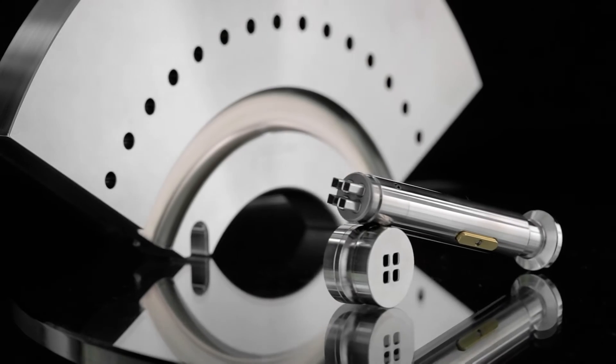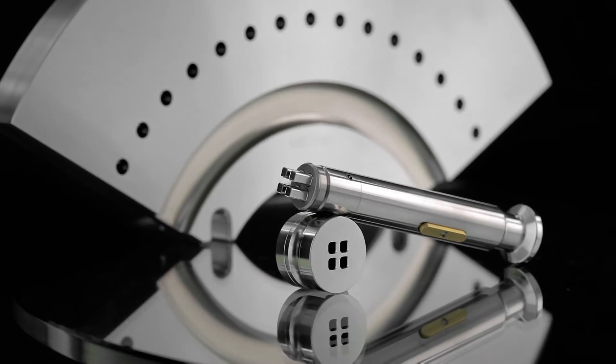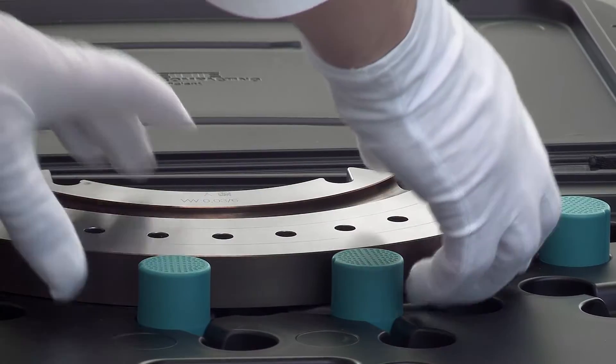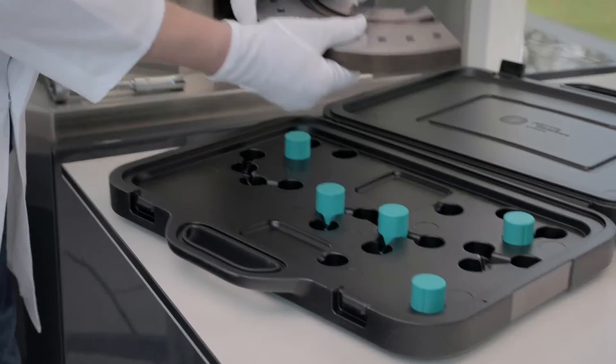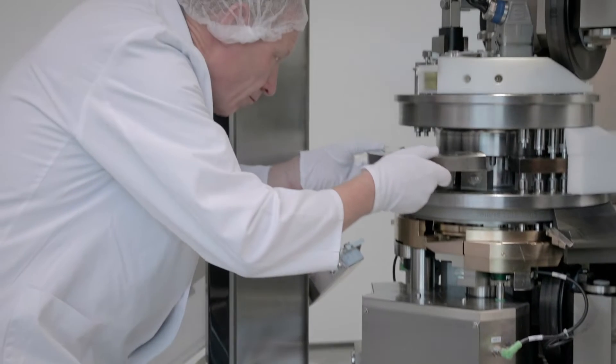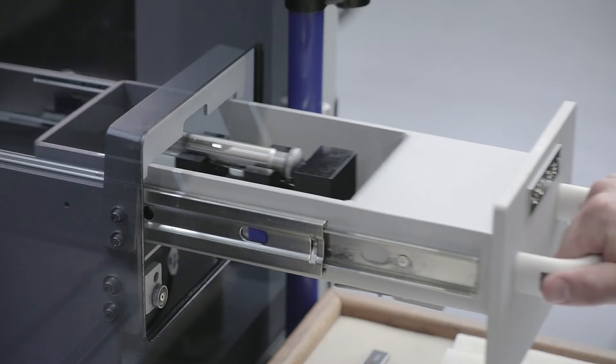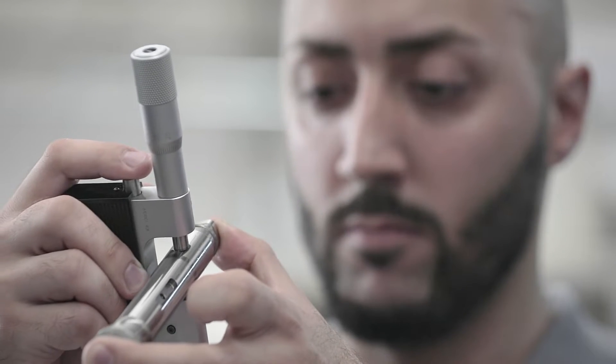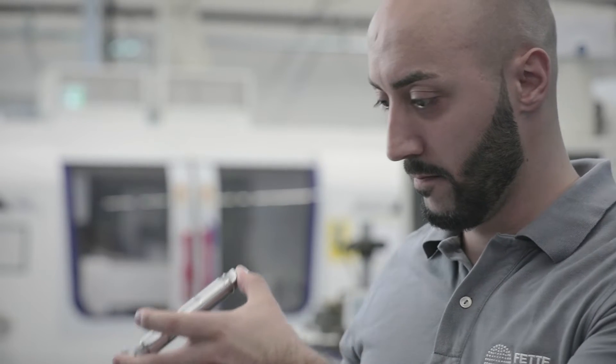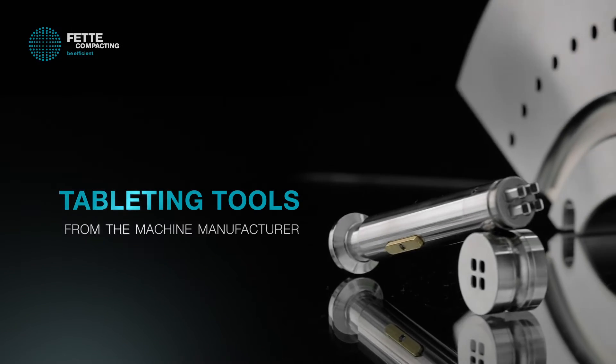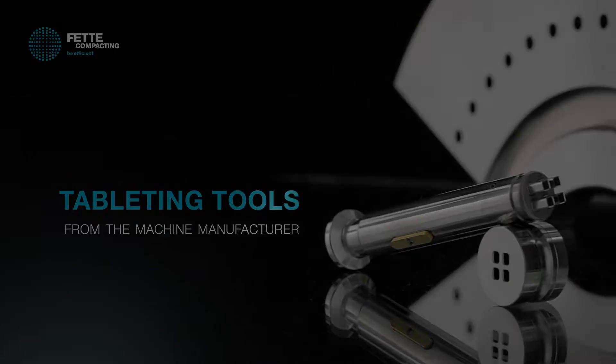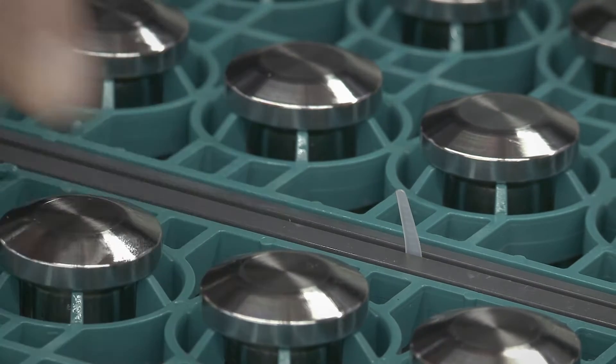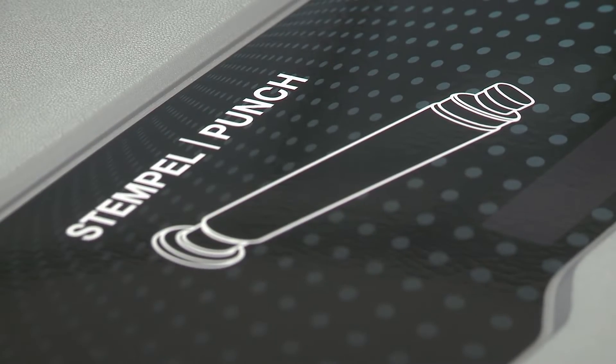Punches, dies, and segments - high-quality tableting tools are the key for efficient production processes. Fetter Compacting is the only supplier that has been producing both tablet presses and tableting tools for more than 70 years. My name is Christian, and at Fetter Compacting I'm responsible for the BU tableting tools.